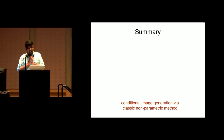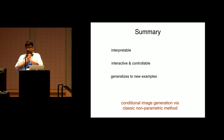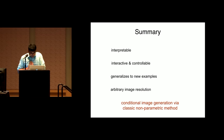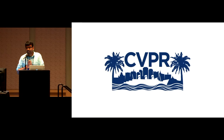In summary, we describe an approach to conditional image generation inspired by the classic non-parametric approach. While simple, our approach is interpretable, interactive and controllable, generalizes to new examples, and can be used to generate images with arbitrary resolution. Allow me to conclude with an important note: while we are on our way to create new approaches for image creation, let us not forget the simple nearest neighbors — at the very least, we need to have them in conversation.